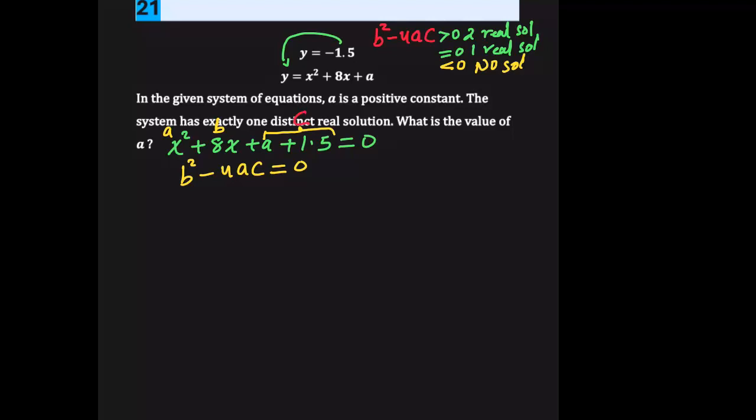So we're going to substitute into this expression. b squared minus 4... what is the value of a? It's 1. And the value of c is this expression, a plus 1.5. And that equals 0.